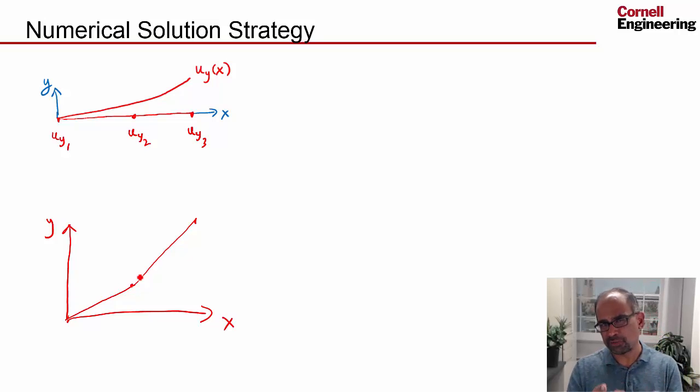And we saw when we did this for temperature interpolation, we also got a slope discontinuity. In that case, it wasn't a problem, here it's a problem. Why is a slope discontinuity a problem?